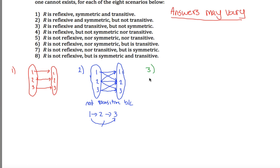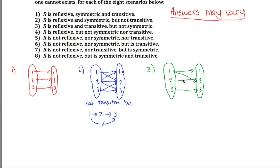Number three asks me to come up with something that is reflexive and transitive but not symmetric. It's going to be reflexive, so we start with the three self-arrows. I want it to be transitive but not symmetric, so I'll draw an arrow from one to two but not have an arrow from two to one. This is not symmetric because there's an arrow from one to two but not from two to one. But it is transitive — there's nothing you can do to break transitivity in this picture.